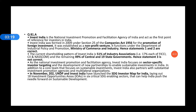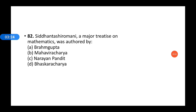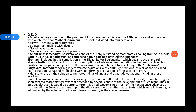Next question: Siddhanta Shiromani is a major treatise on mathematics. What was it authored by? The options are Brahmagupta, Mahaviracharya, Narayan Pandit, and Bhaskaracharya. The answer is the fourth option — Bhaskaracharya.